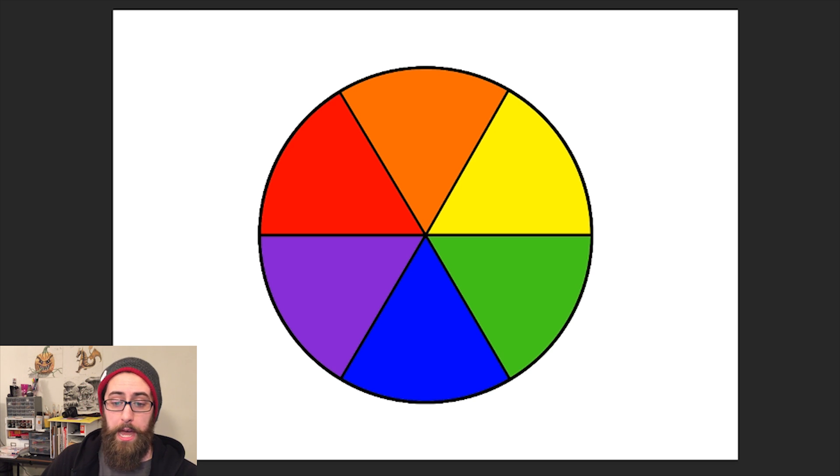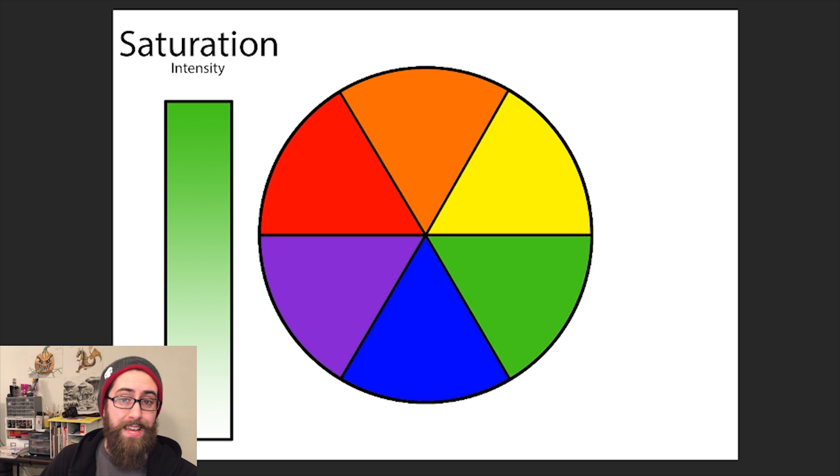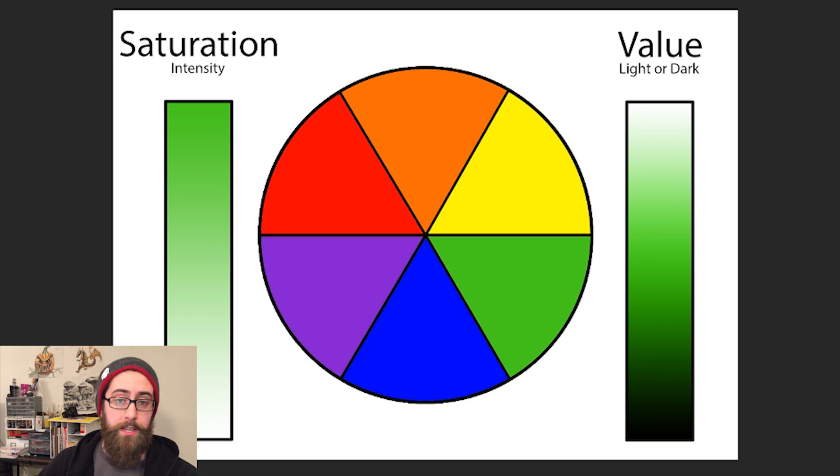However colors have much more than just the color themselves. This can include differences in saturation, which would be the intensity of a color, or value, the lightness or darkness of the color you choose.